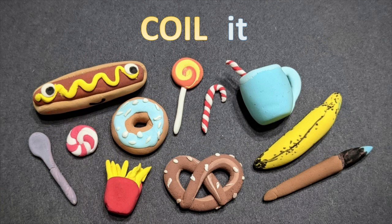Here are some Model Magic minis that I created using the coiling technique. You'll notice that some of them are simple like the banana or the paintbrush, while others might be a little bit more complicated like the Candy Cane and the doughnut. I will show you how I do some of these techniques.